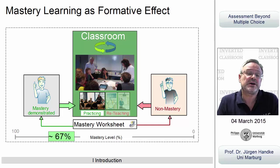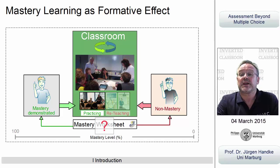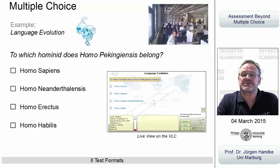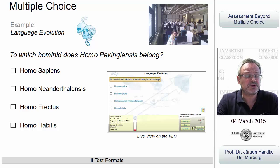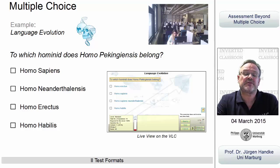But what types of assessment do we take to generate the mastery level? Like most digital teaching scenarios, we have been employing multiple choice tests, where you have either one or several choices. In this example taken from the worksheet on language evolution, you simply have to find one of four alternatives.